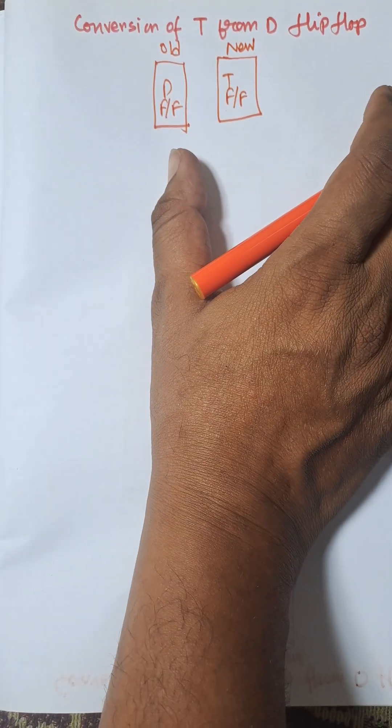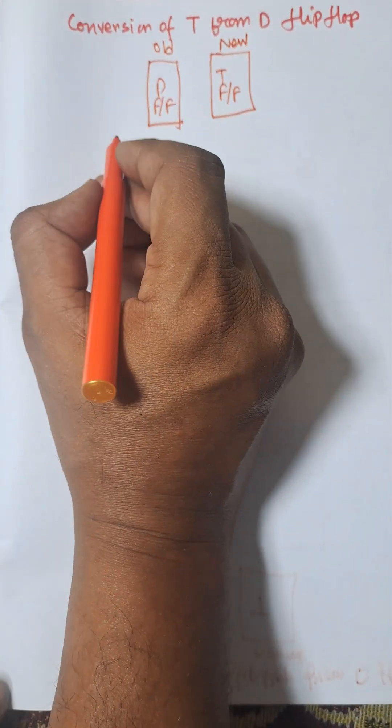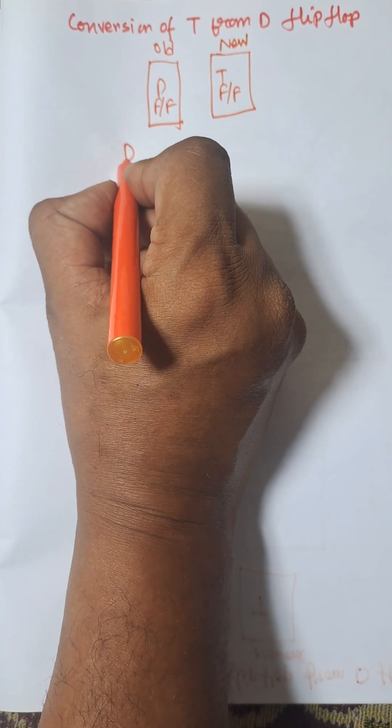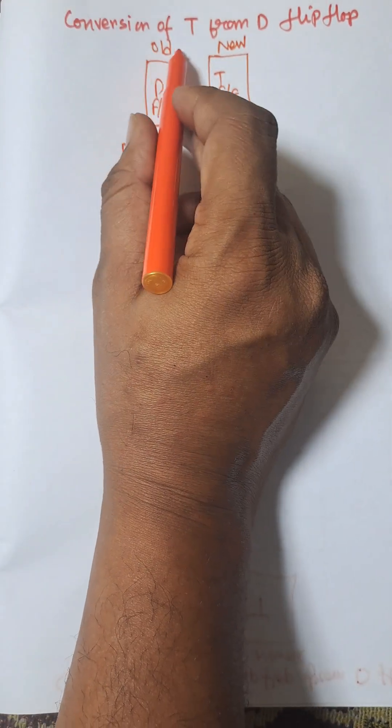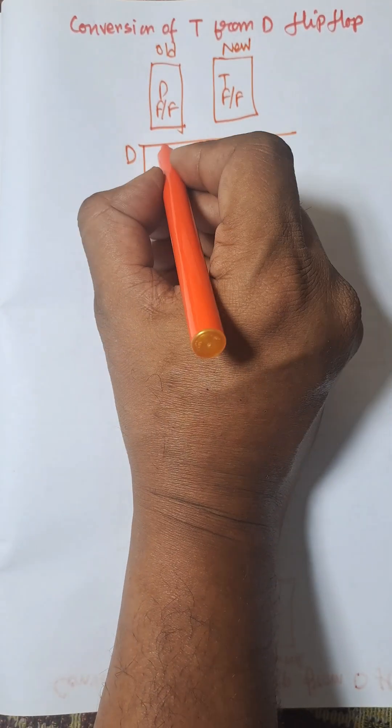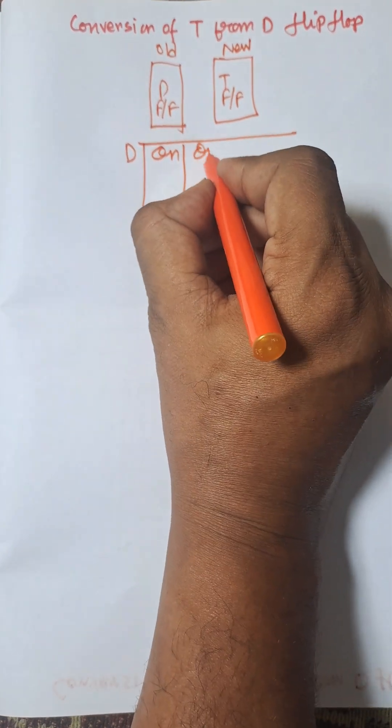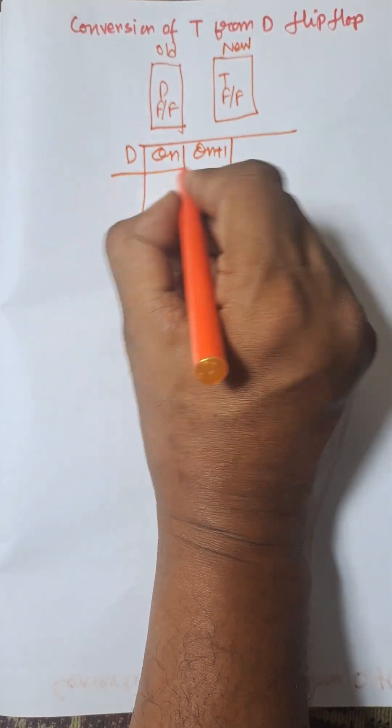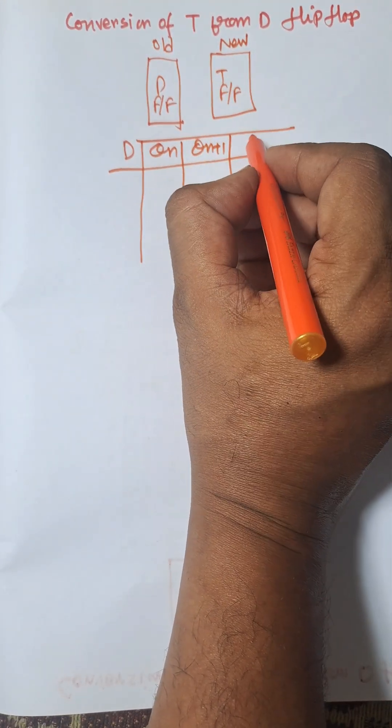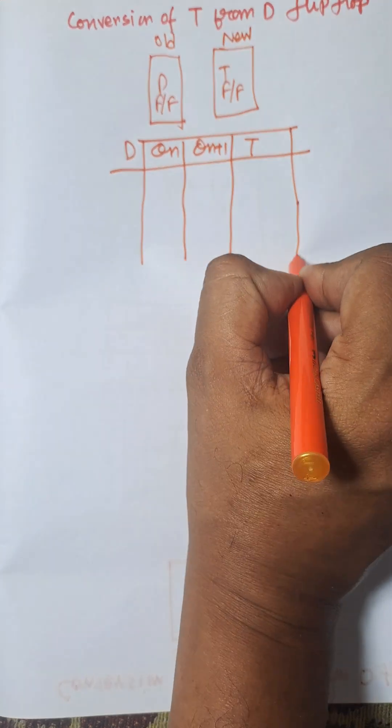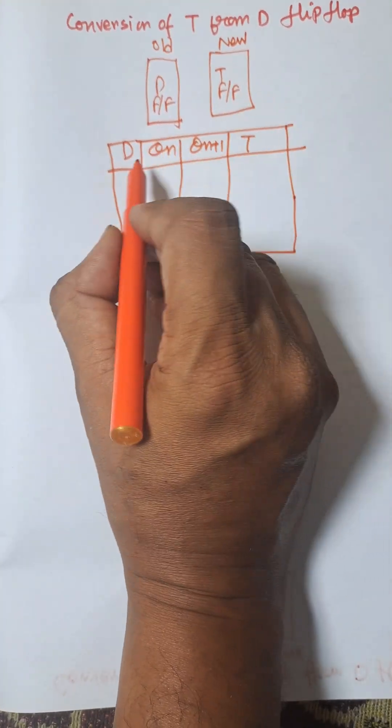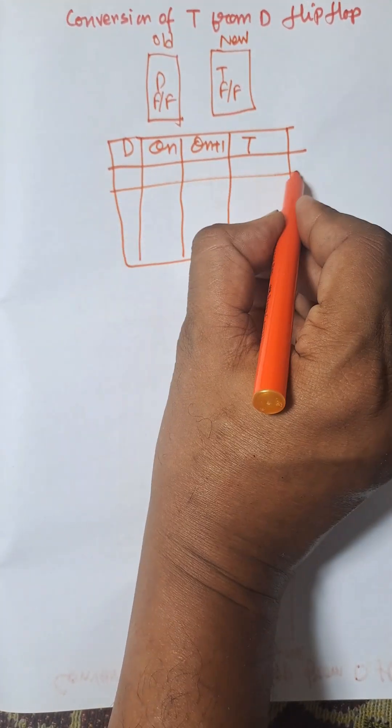Now we need to construct the conversion table from D to T. D is the first column as D is the old flip-flop, and there is a present state Qn and next state Qn+1. T is the new flip-flop, so T input will be there. There are two variables, so there will be four rows.